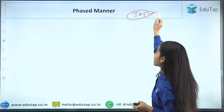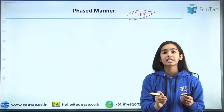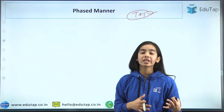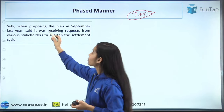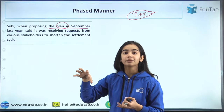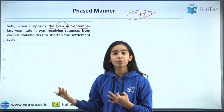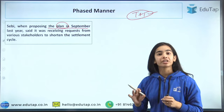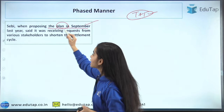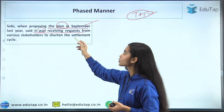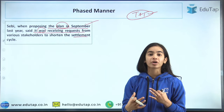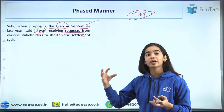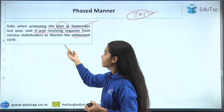With T plus one, within 24 hours after the order is executed, you will get your shares — instead of waiting 48 hours, you only wait 24 hours to receive your shares and give back the money. SEBI, when proposing the plan in September, said it was receiving requests from various stakeholders to shorten the settlement cycle so that more liquidity can be brought into the market, margin requirements will be less, and risk will be less.